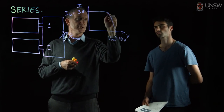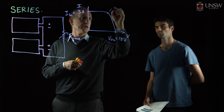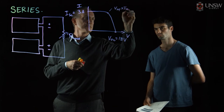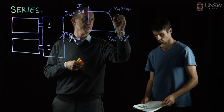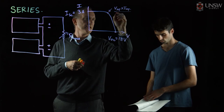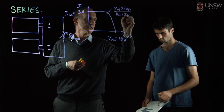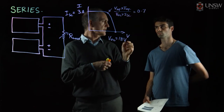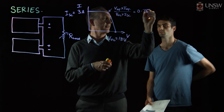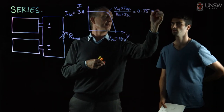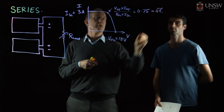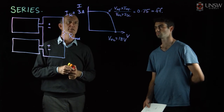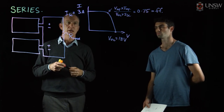The fill factor tells us that the voltage at maximum power point multiplied by the current at maximum power point, at this position here, divided by VOC times ISC, equals 0.75. That's the fill factor. So that's what an unshaded solar module will look like.